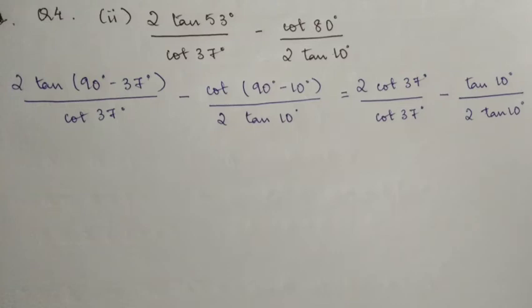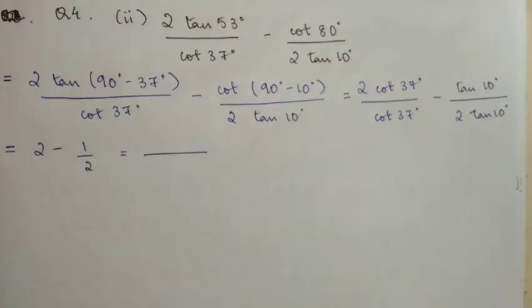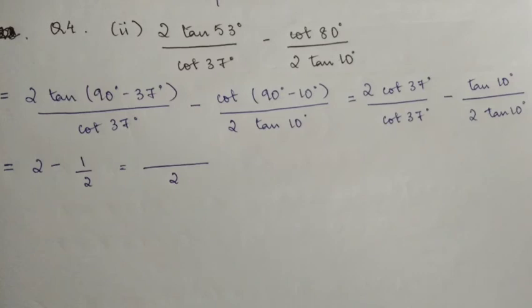So the numerator cot 37° and denominator cot 37° cancel out. Similarly, tan 10° and tan 10° cancel out. So in the first term you have 2, and in the second term you have 1/2 remaining.